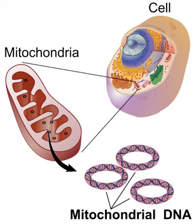Mitochondrial DNA was discovered in the 1960s by Margit M. K. Nass and Sylvan Nass by electron microscopy as DNase-sensitive threads inside mitochondria, and by Ellen Haslbrunner, Hans Tuppy, and Gottfried Schatz by biochemical assays on highly-purified mitochondrial fractions.